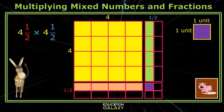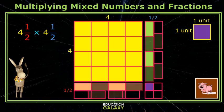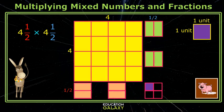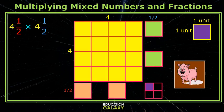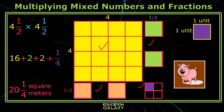Now simplify, Maisie. Of course. I put my halves together and add up all my wholes. I have sixteen here, two here, two here, and then my one-fourth. So that makes twenty and one-fourth square meters.